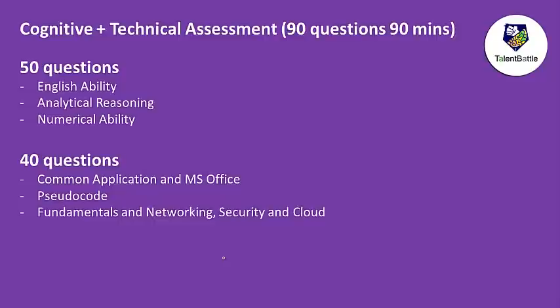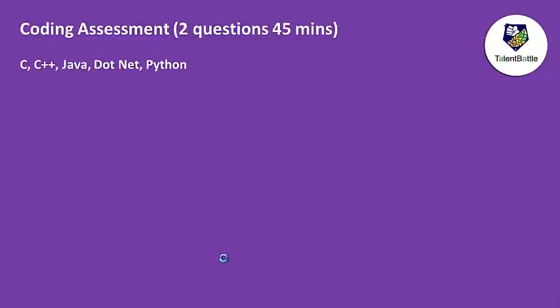Students who clear the cognitive and technical assessment will get a break of 5 to 10 minutes, during which they will also receive the result. If you clear it, there will be an immediate coding assessment. Those who cannot clear the cognitive and technical assessment will end their process there. The coding assessment will have two questions and 45 minutes — you can solve them using C, C++, Java, .NET, or Python.